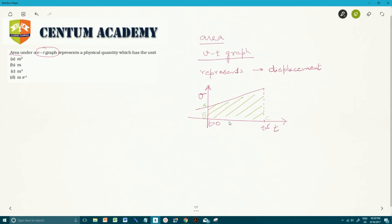And we know that area of trapezium ABCD, the area in this case is half into sum of parallel sides, sum of parallel sides multiplied by distance between the parallel sides, distance between the parallel sides.